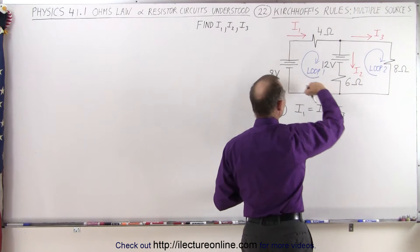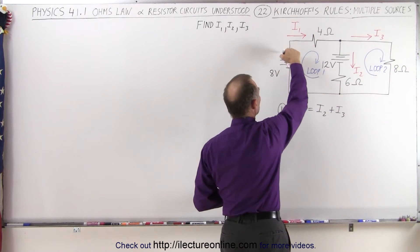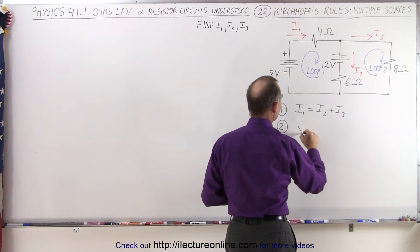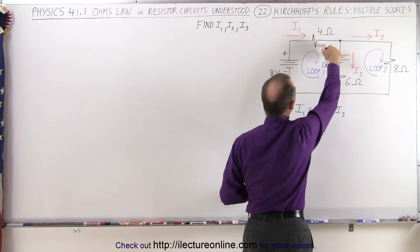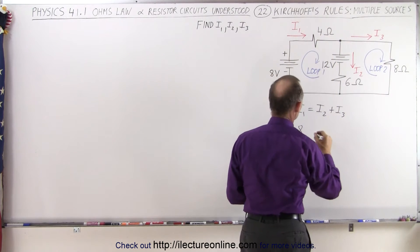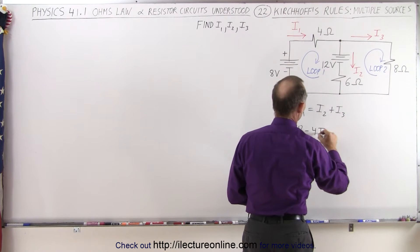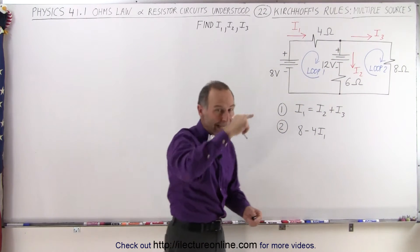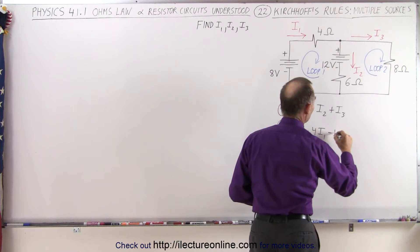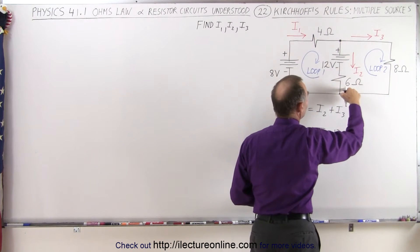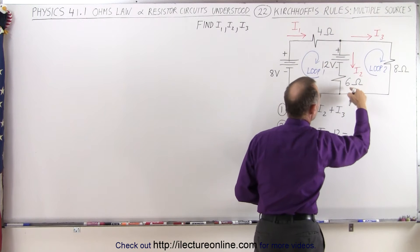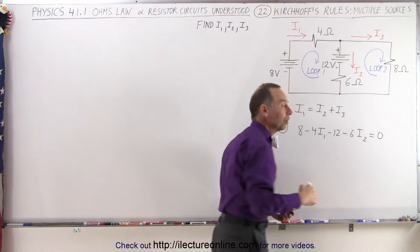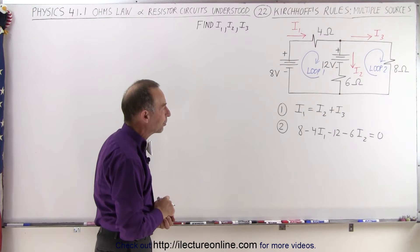Let's start at this point right here and go around loop one. First of all, we have a voltage rise because this is the positive side of the battery. This is the negative side of the battery. So for equation two, we get eight volts. Then here we have a voltage drop that would be minus the current times the resistance. That would be minus four I1. Come around the corner here. Now notice we go from the positive to the negative end of the battery in that direction. So that's a voltage drop minus 12. And then we have another voltage drop across here. That would be minus the current times the resistance. That would be six times I2. And that adds up to zero as we come back to the same point.